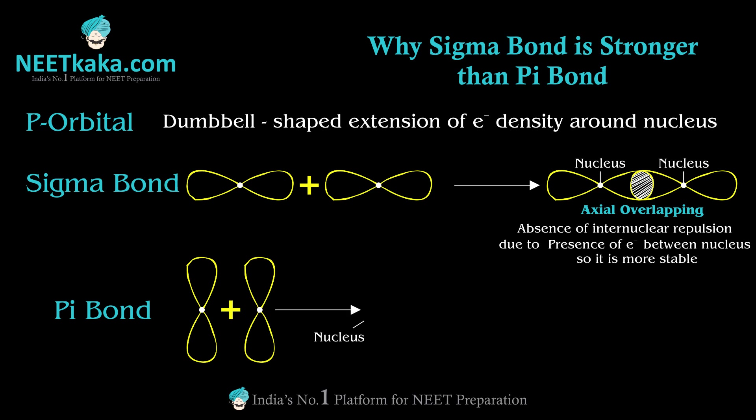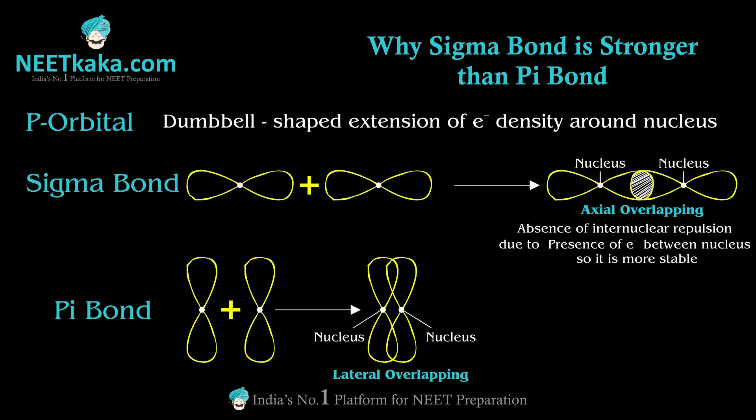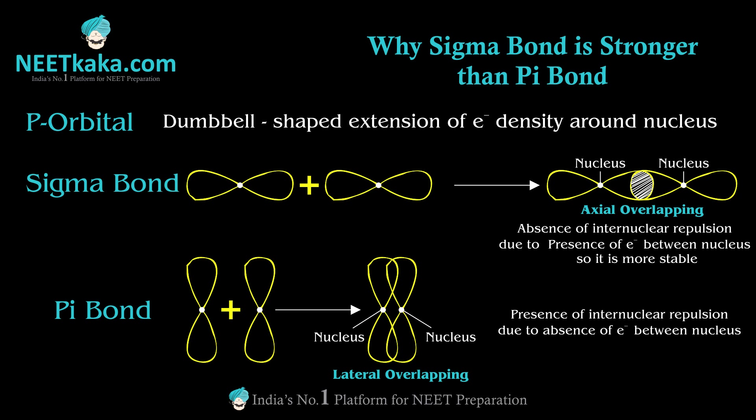Now consider two py and py orbitals approaching each other at zero degrees — a lateral or parallel approach. They undergo lateral overlapping and form a pi bond. However, even after pi bond formation, electron density is absent between the nuclei, so there is internuclear repulsion. Due to this internuclear repulsion, the overlapping is not as effective, making the pi bond weaker than the sigma bond.